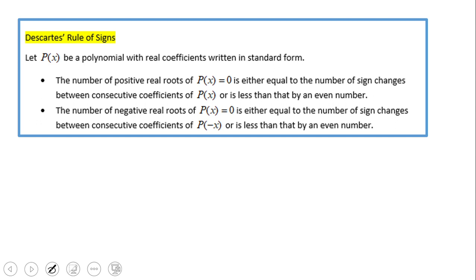The number of positive real roots of a polynomial equation is either equal to the number of sign changes between consecutive coefficients of P(x) or is less than by an even number. I want to see an example of what they mean by that.